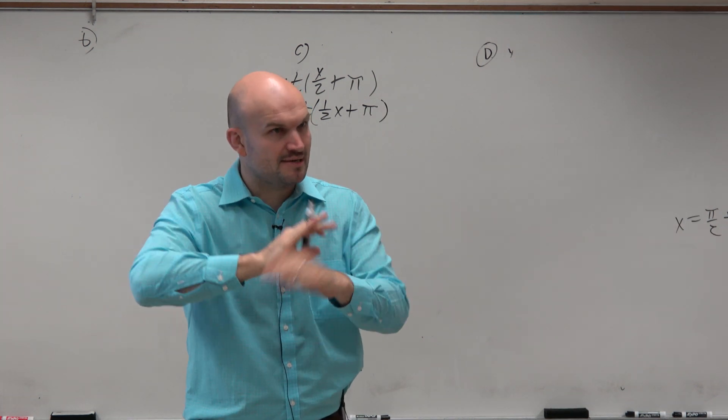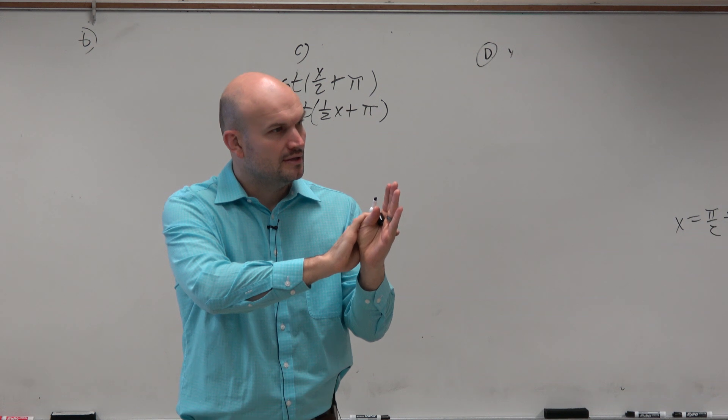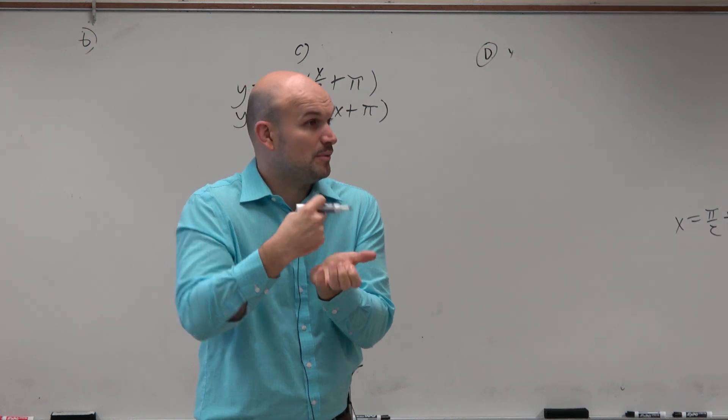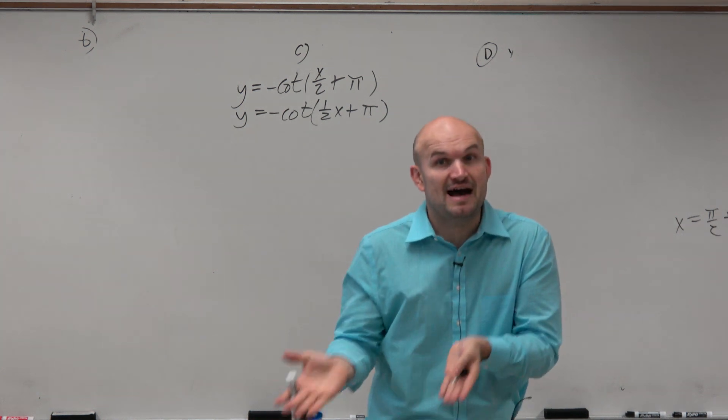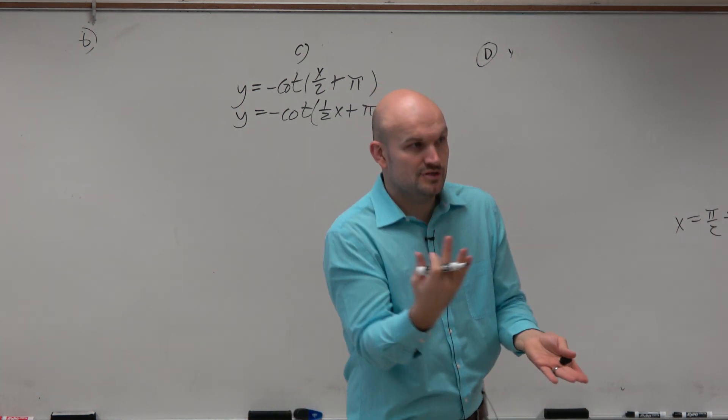Remember that. Dividing by 2 is the same thing as multiplying by 1 half. Therefore, we know that B is 1 half. But we've got to factor it out. Factoring out is like dividing out 1 half. If you're going to divide by 1 half, that's the same thing as multiplying by 2.